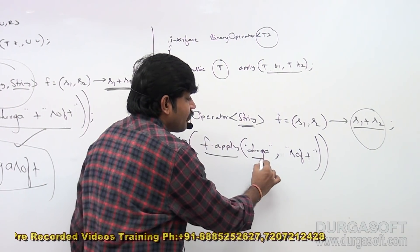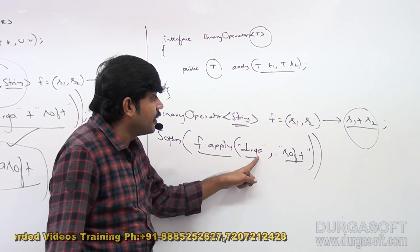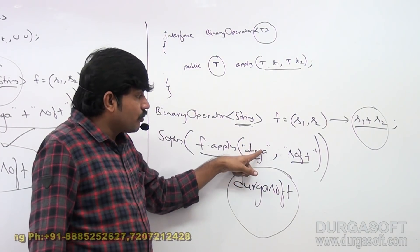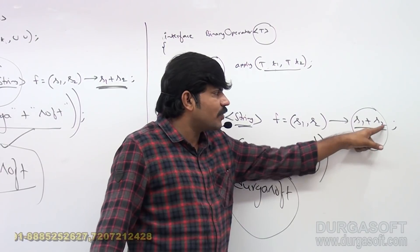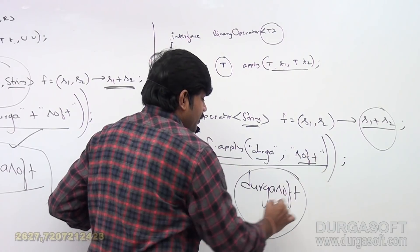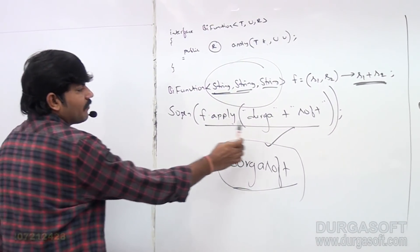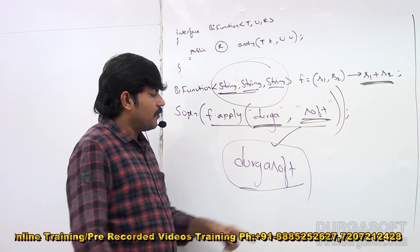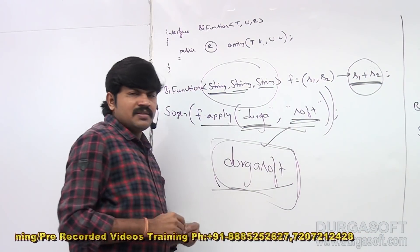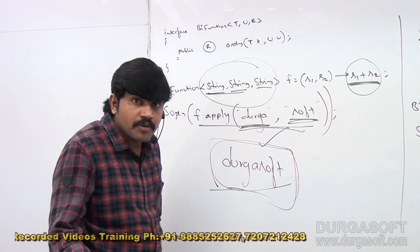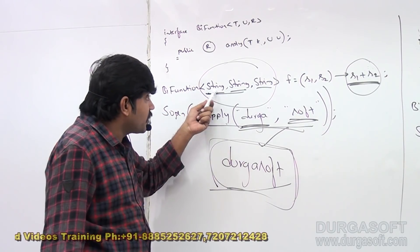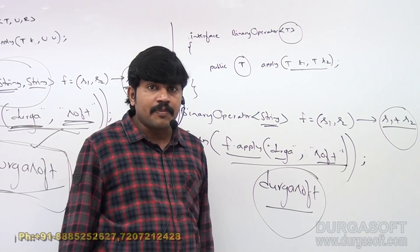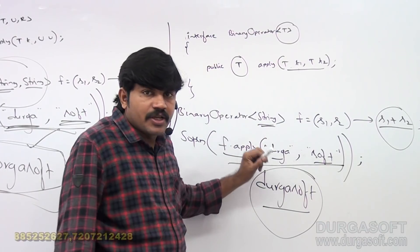Observe carefully: the first argument is 'Durga' and the second argument is 'Soft'. This apply method is going to provide the concatenation. The output is 'DurgaSoft'. Now compare: with bifunction, how many times are we specifying the type parameter? Three times. But with binary operator, only once. It is more convenient to use binary operator compared to normal bifunction.